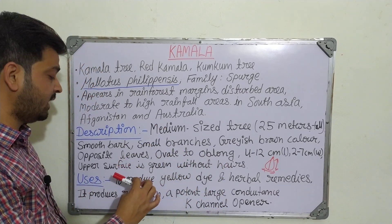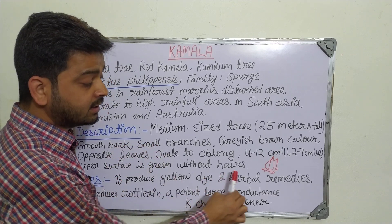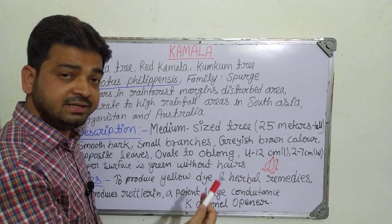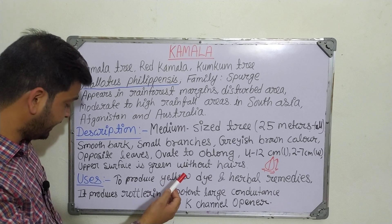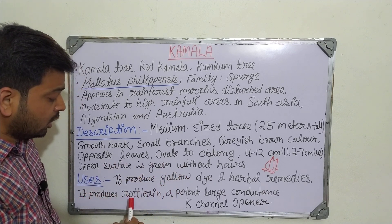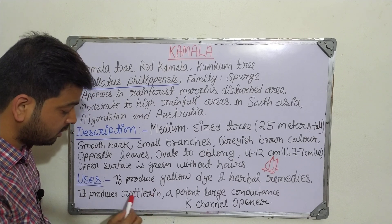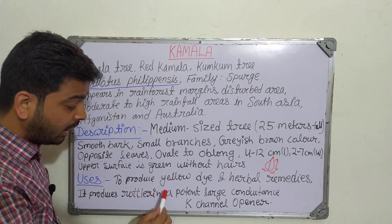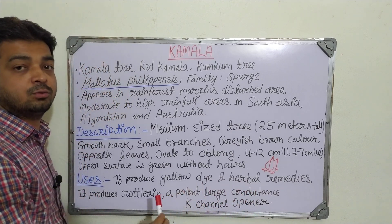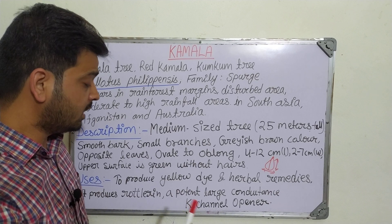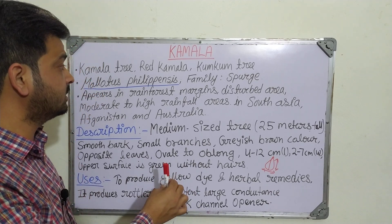This plant is used to produce yellow dye and various herbal remedies. It has antioxidant properties and wound healing activity. It produces rottlerin, which is a potent large conductance potassium channel opener, required in the context of the cardiovascular system. These are the different uses of the Kamala tree.